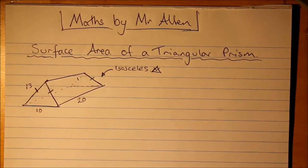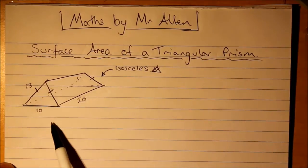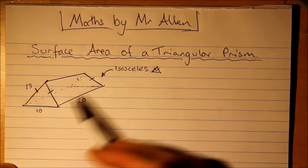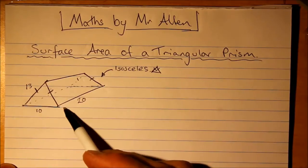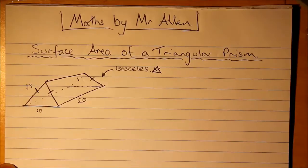Okay, we're going to have a look at the surface area of a triangular prism. Now, a prism is a 3D solid with a congruent cross section. In this case it's a triangle. It's an isosceles triangle.